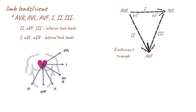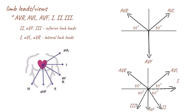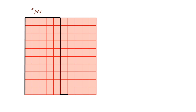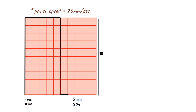By combining the limb vectors, we can create the hexaxial system which gives a perspective of the view of all six of the limb leads. The information gathered by all the leads of the ECG is recorded on a graph as a tracing. The standard ECG paper speed is 25 mm per second. One small square is 1 mm and represents 0.04 seconds, while one large square is 5 mm and represents 0.2 seconds. On the vertical axis, 10 mm or 10 small squares is equal to 1 mV when standard calibration is used. Positive voltages reflect as upward deflection on the ECG while negative voltages reflect as downward deflections.